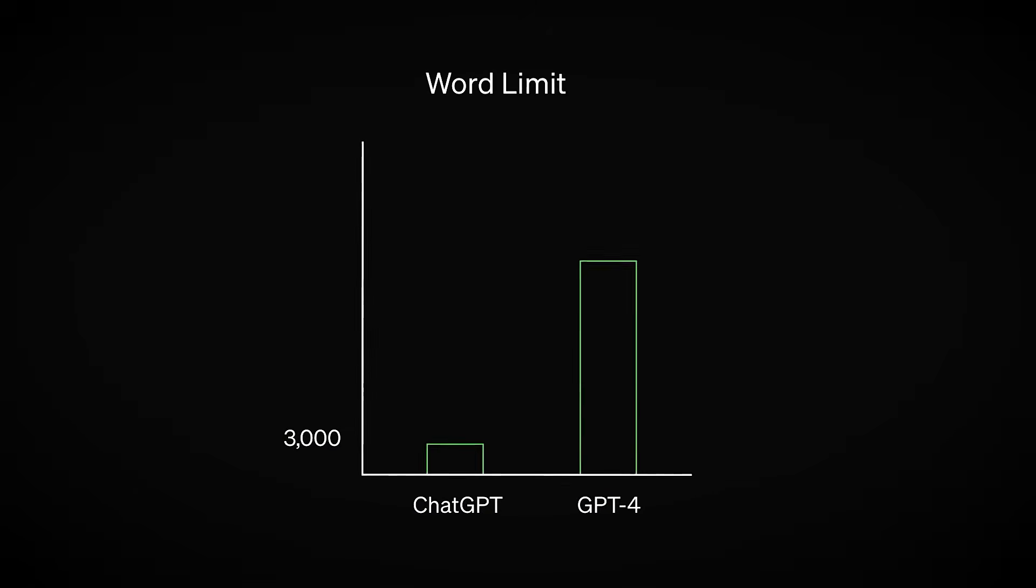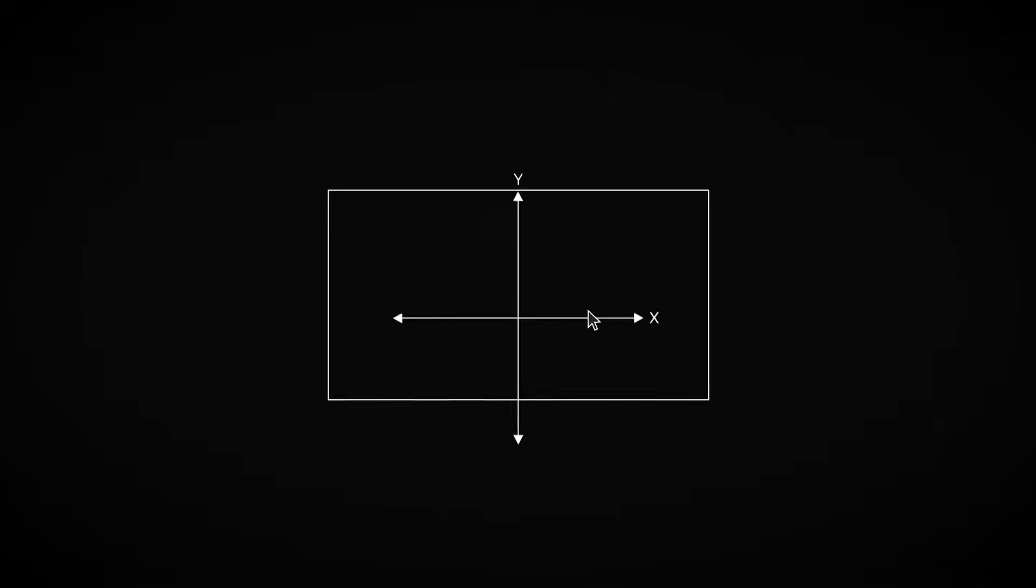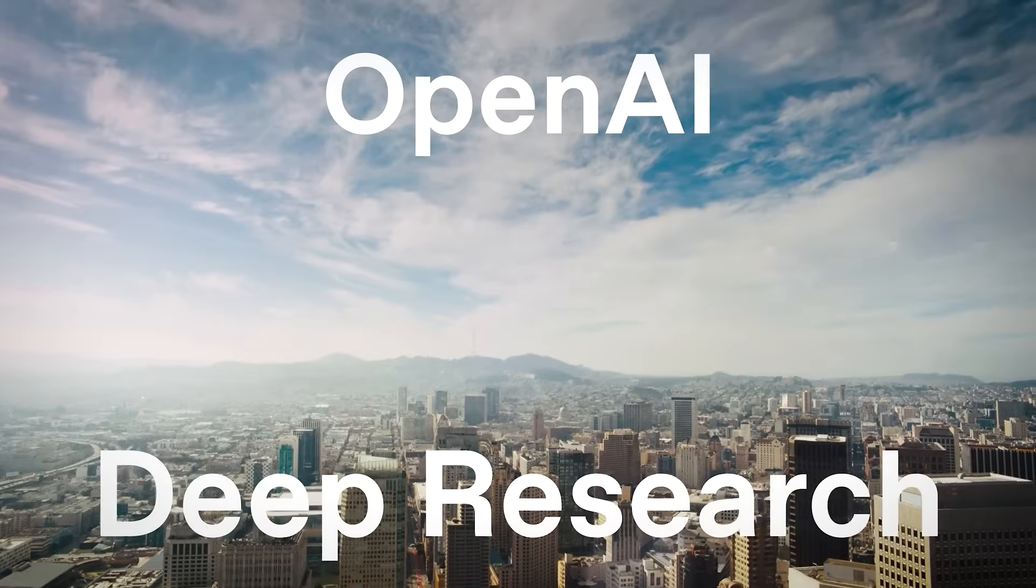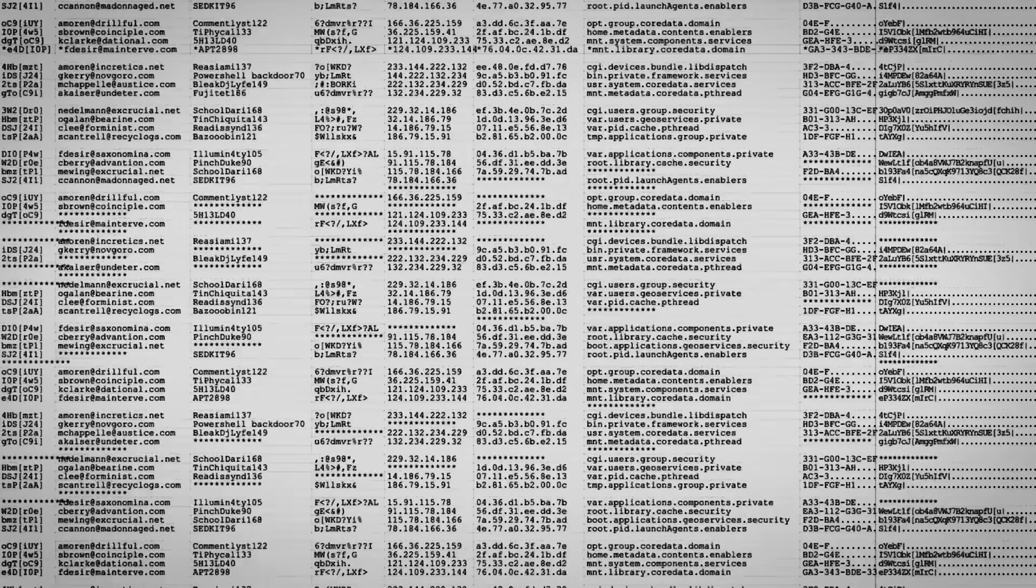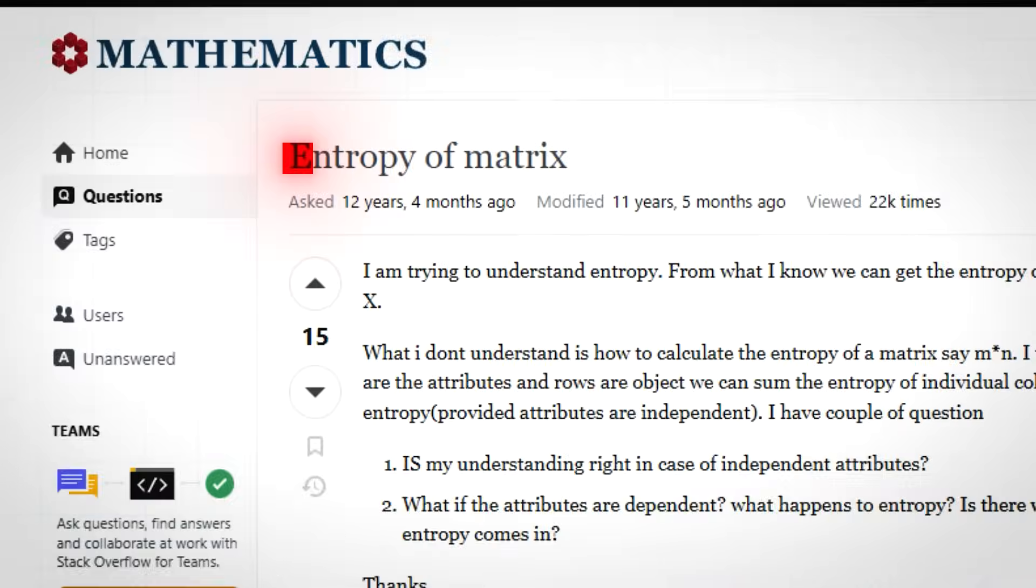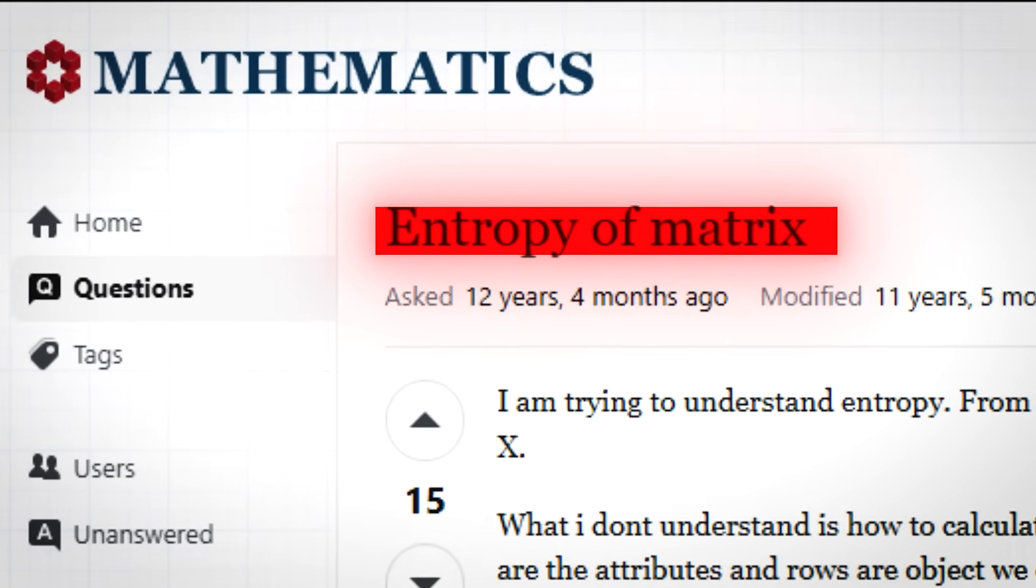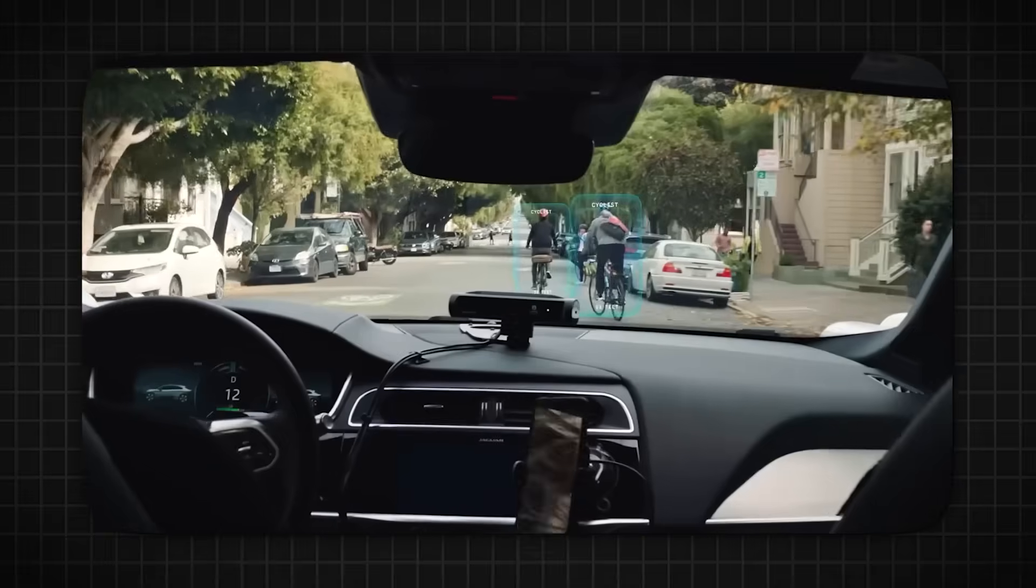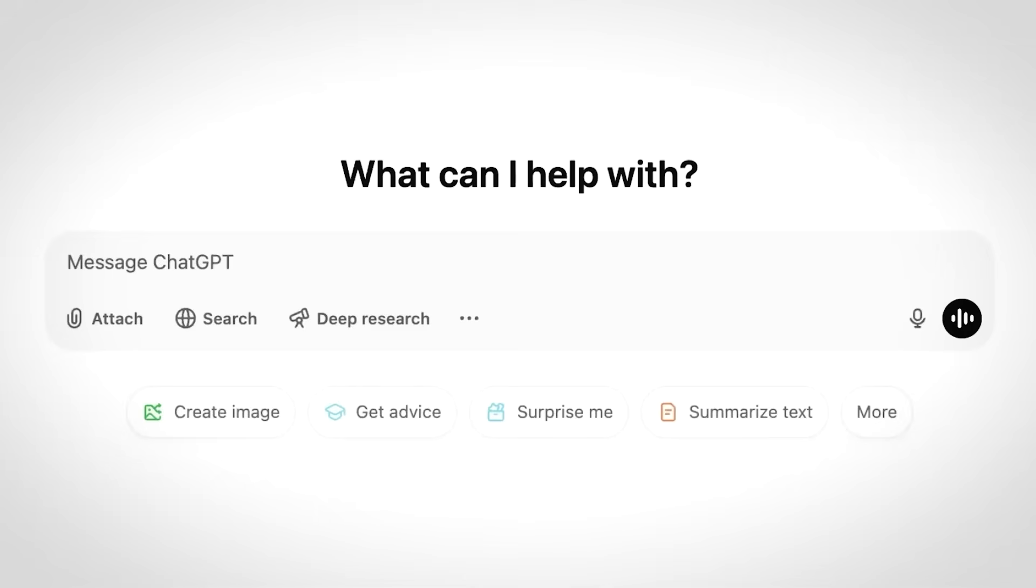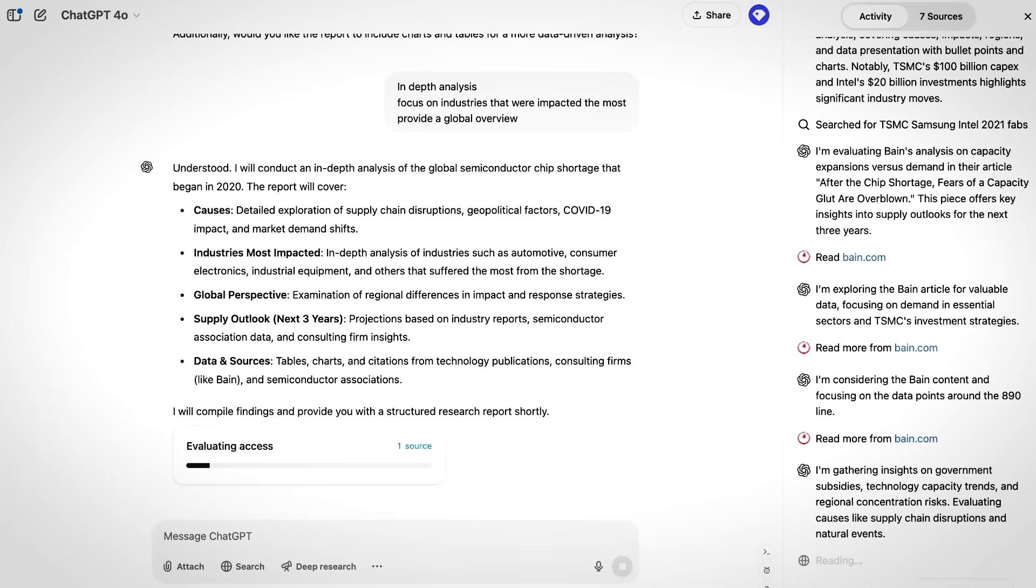Right now, training an AI model like GPT-4 takes months and consumes millions of dollars in electricity. The sheer amount of computational power required is staggering, making AI development expensive, slow, and highly resource-intensive. But the entropy matrix could change that entirely. By optimizing how AI processes and stores information, this breakthrough could reduce training times by over 80%, meaning AI models could learn faster, with less energy, and at a fraction of the cost. This isn't just about making AI smarter, it's about making it radically more efficient.